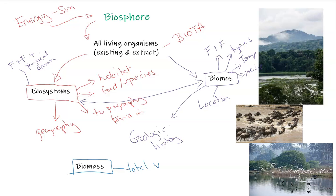The Sahara changed drastically from nice grasslands with large animals like those found in the Serengeti today, to a desolate desert. Next is biomass — the total weight of a species in a certain area. The more species in a given area, the greater the biomass. Biomass is an indication of the health of the ecosystem or biome, which is a result of the climate, geographic location, and physical environment. Those conditions dictate the health shown through biomass and species diversity.